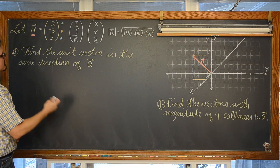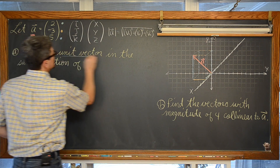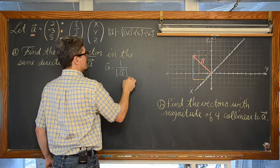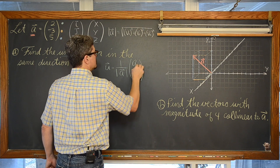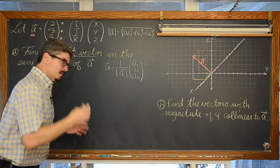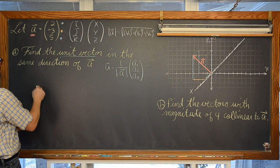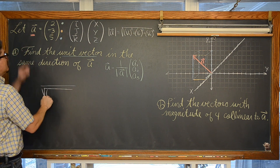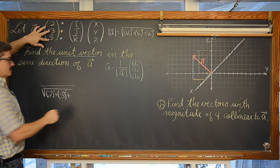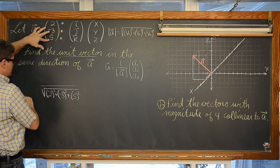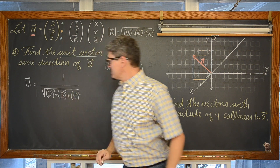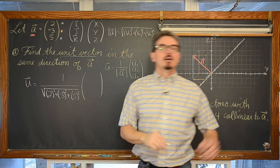Finding a unit vector — remember that a unit vector is going to be 1 over the magnitude of whatever your given vector is. So we are going to do 1 over the magnitude of vector A, times each of the components in that given vector. The magnitude of a three dimensional vector becomes the denominator, creating the scalar multiple which we multiply to vector A.